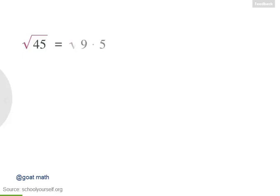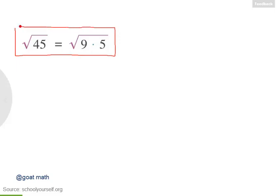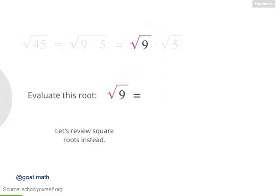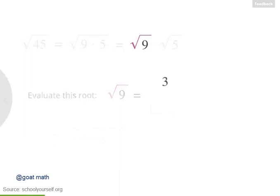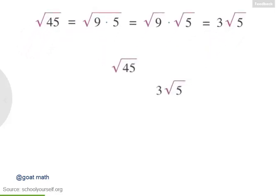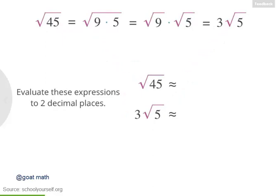Well, 45 equals 9 times 5, so the square root of 45 is the same thing as the square root of 9 times 5. Because we're multiplying, we can distribute this root: it equals the square root of 9 times the square root of 5. The square root of 9 is 3, so the square root of 45 equals 3 times the square root of 5. Use a calculator to evaluate both expressions to two decimal places and make sure they have the exact same value.